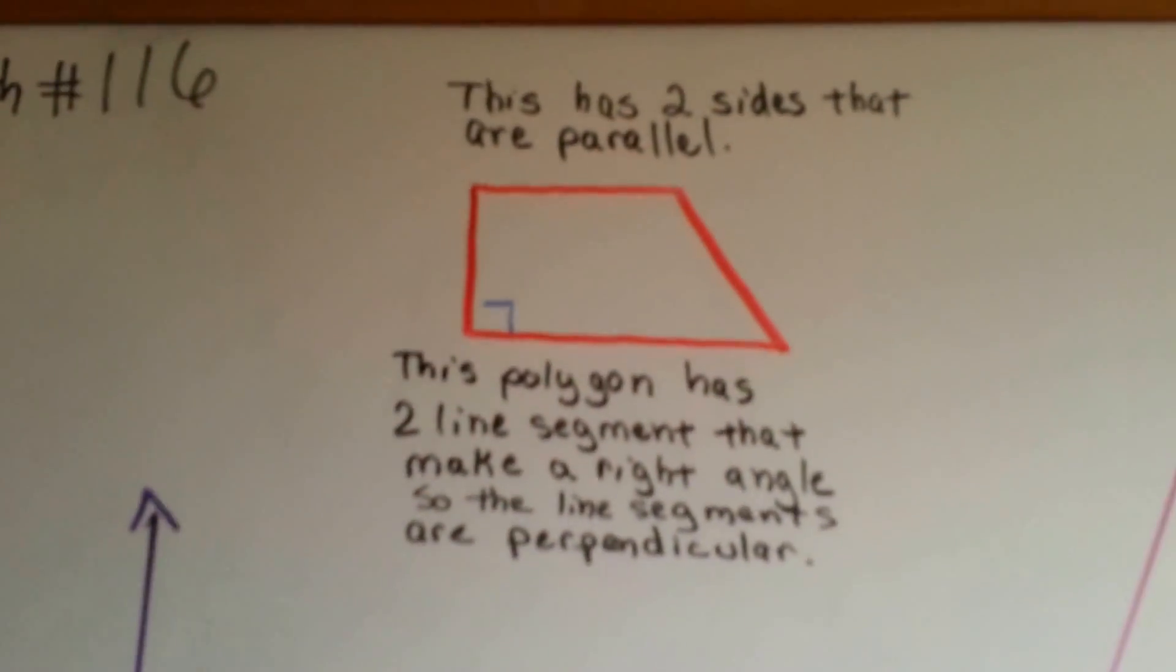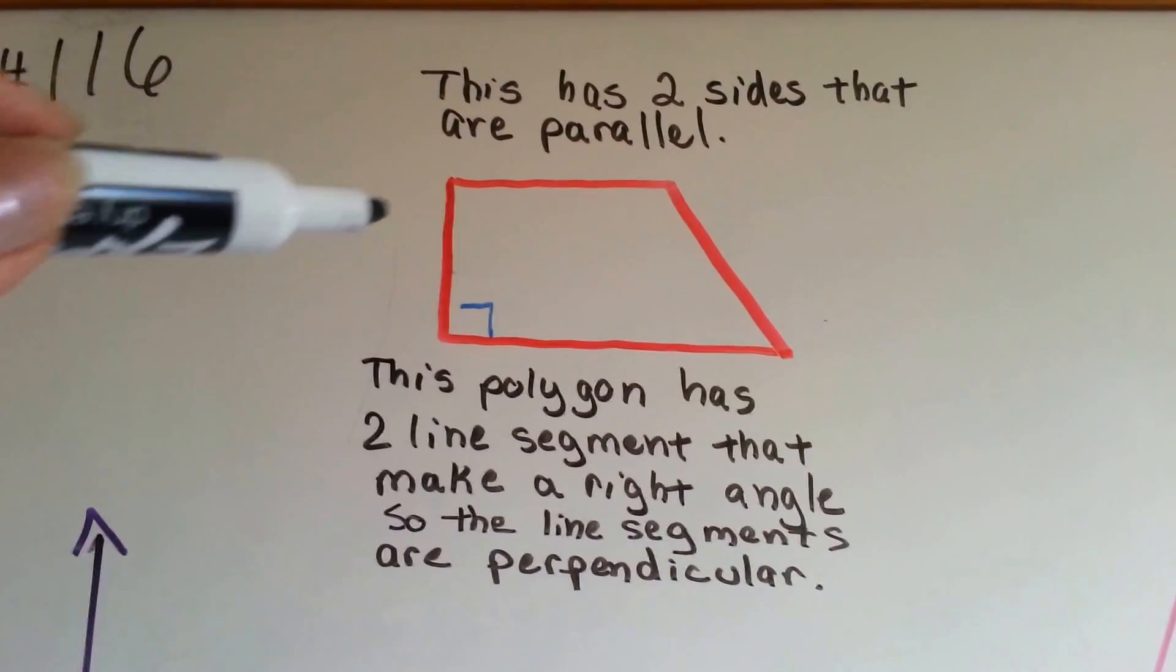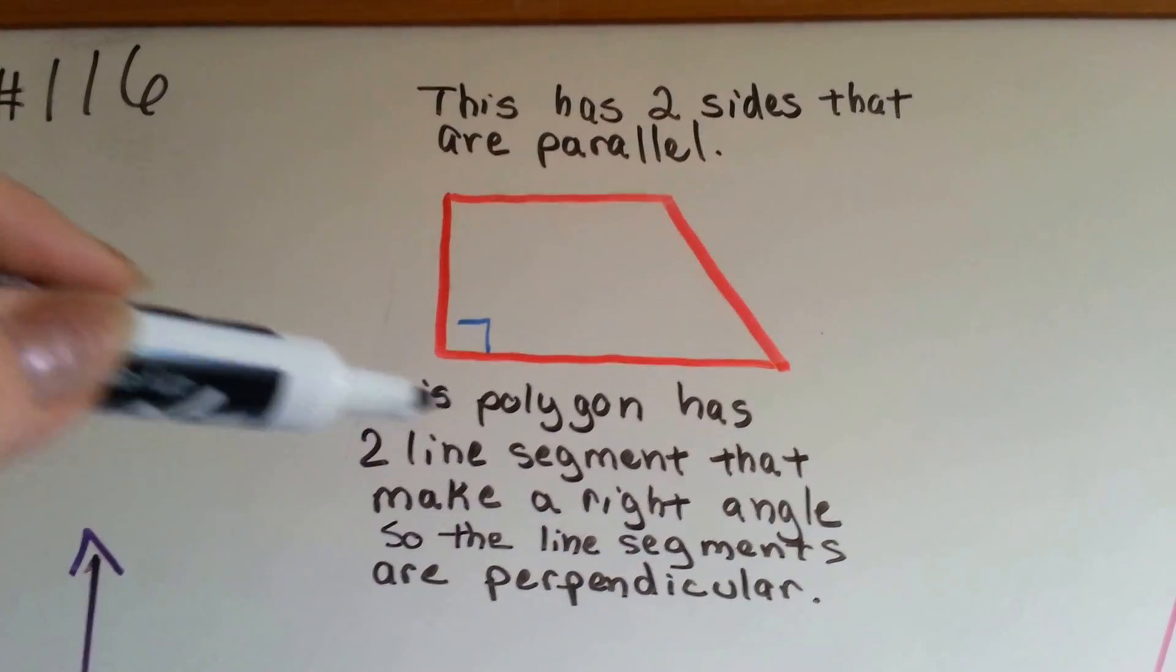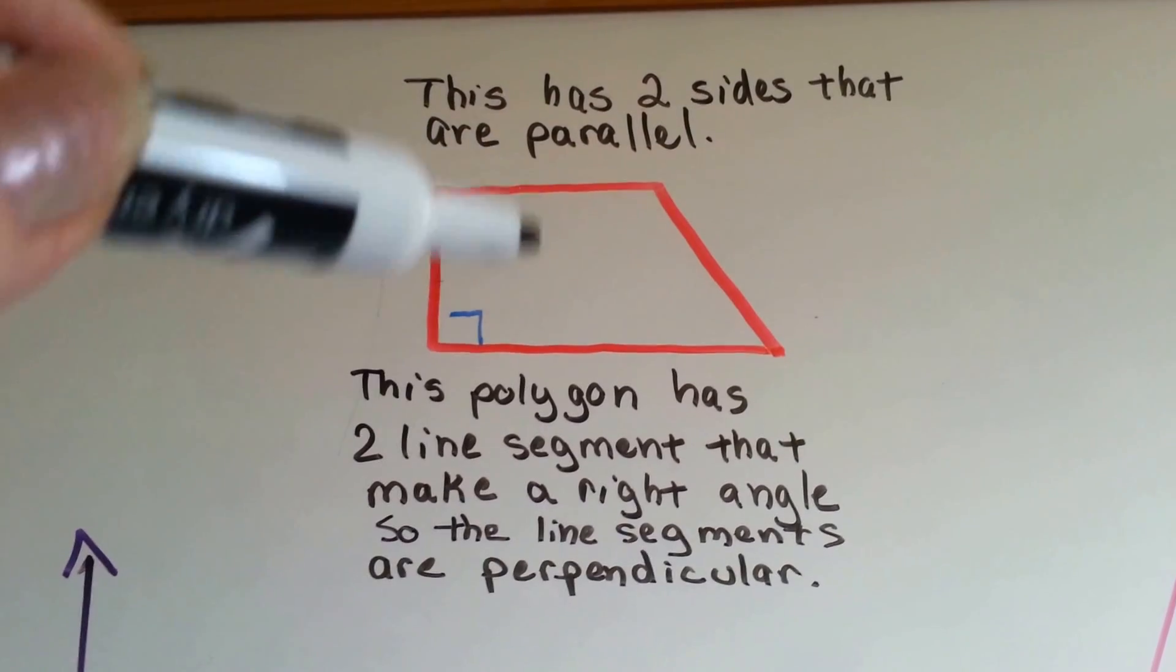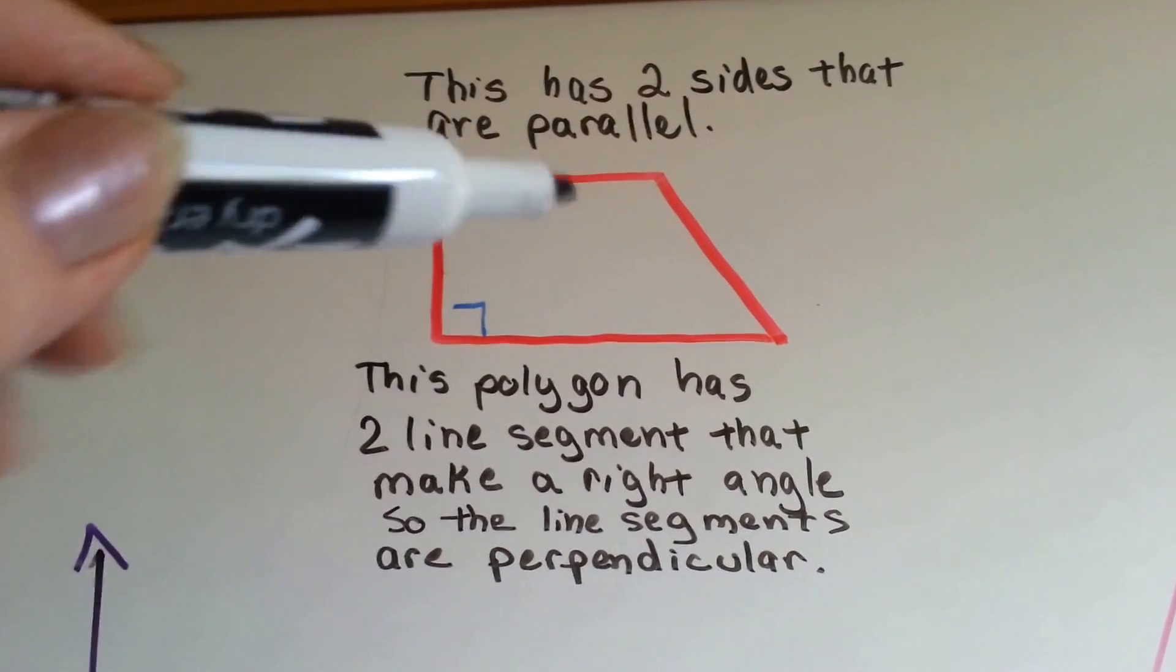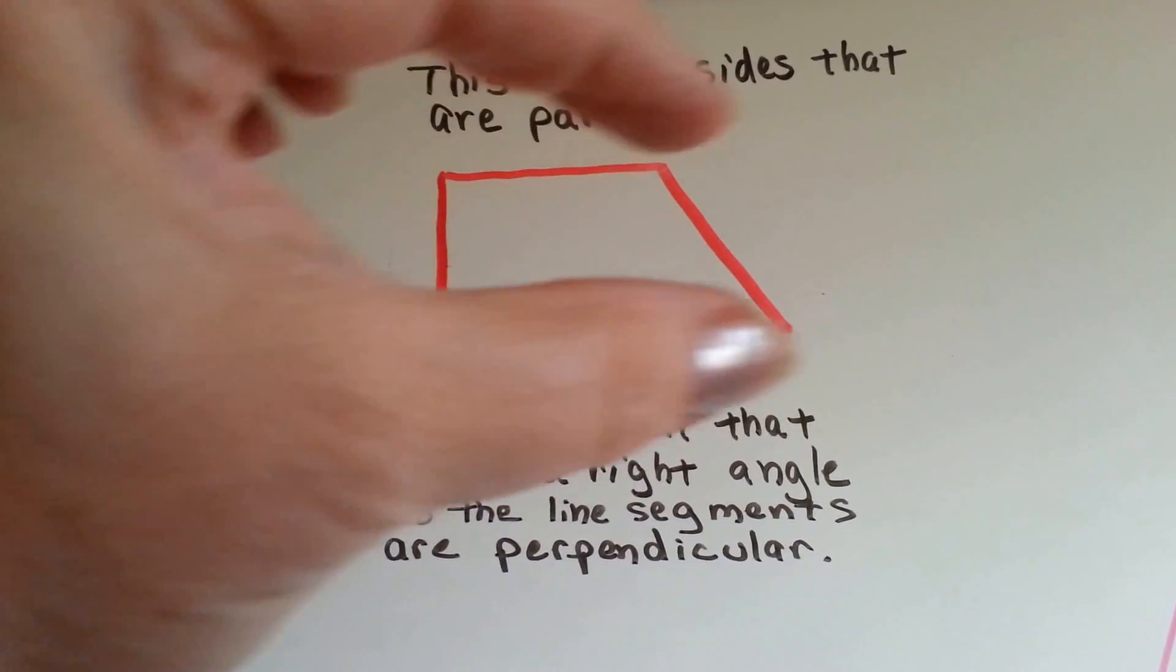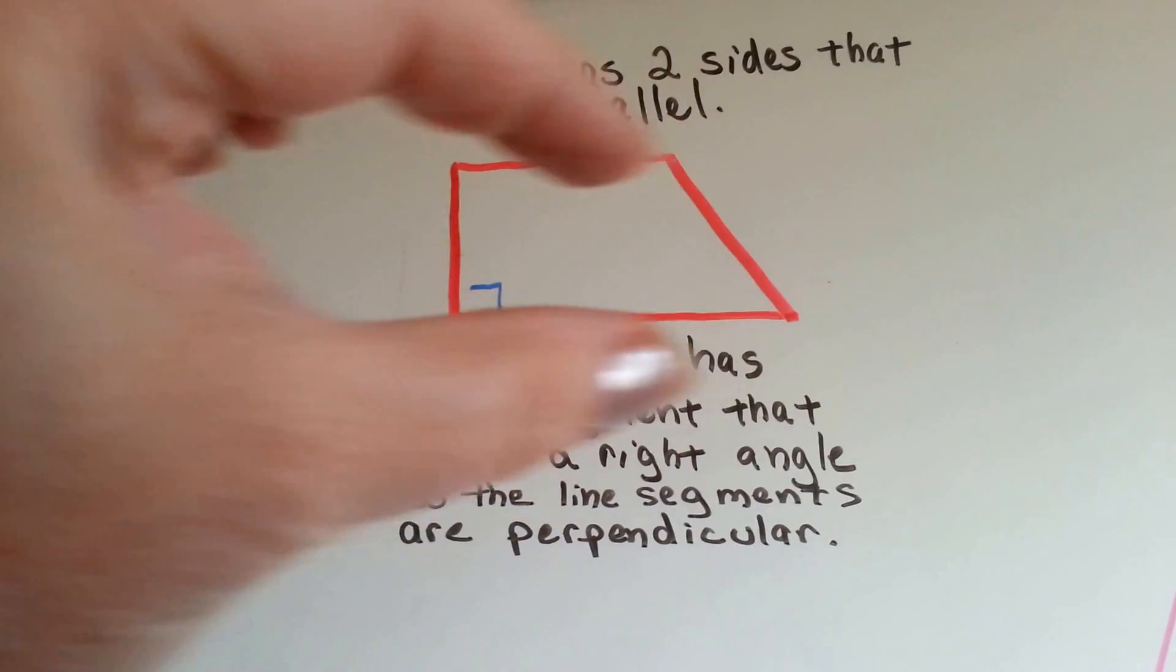Now let's look at this shape here. This quadrilateral, which is a polygon, has two sides that are parallel. This side and this side are parallel to each other. Do you see how they continue to go this way? These are parallel.